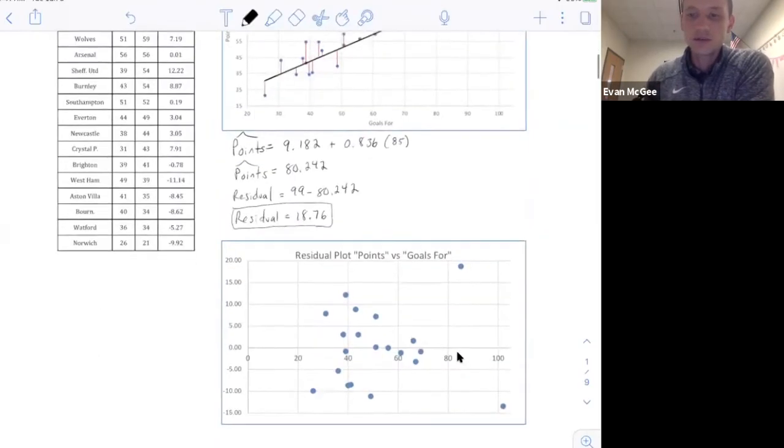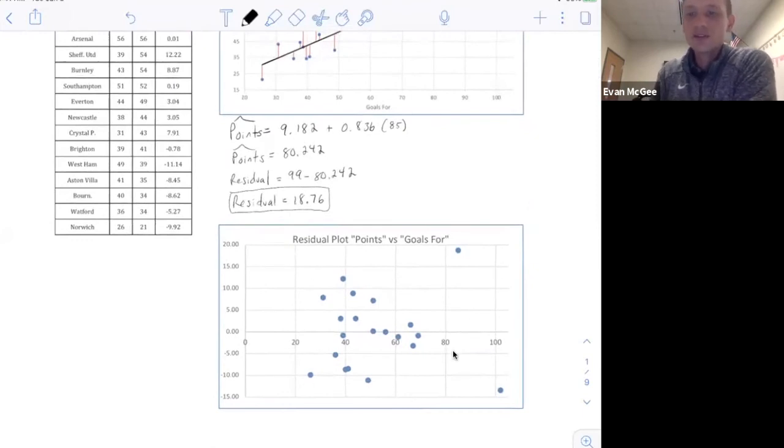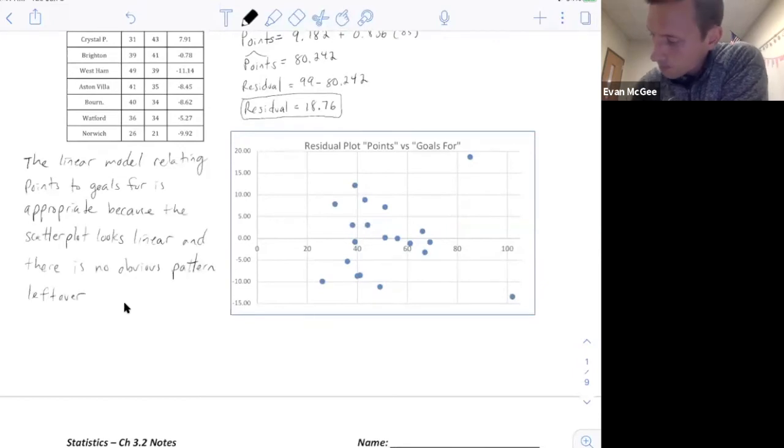So down here you can see that I have the residual plot that was on the graphing calculator. And the key for the residual plot is we want there to be no leftover pattern. We want the residuals to be randomly scattered, not revealing any hidden pattern in the data. And that's to me what it looks like in this data that we have here. I don't see any curves. I don't see it starting small and getting larger. It looks relatively evenly scattered throughout. And so what that means is this linear model relating points to goals for is appropriate for this data. So here I've explained why this linear model is appropriate. I gave two reasons. The scatter plot, the original scatter plot, looks linear. And there is no obvious pattern left over in the residual plot. So again, the residual plot is just to determine if a linear model is appropriate.